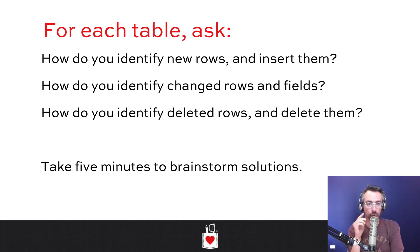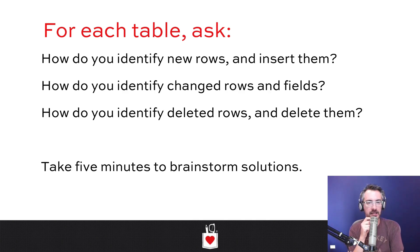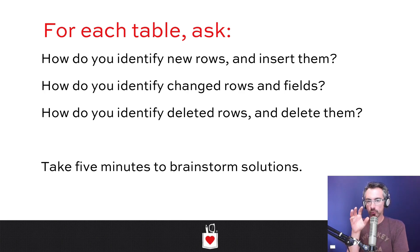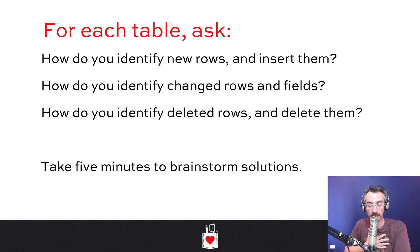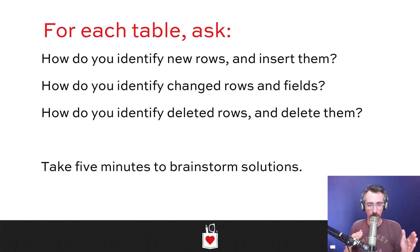Order ID number two is actually in production, but not in DR. Does that mean order ID number two is a new order that needs to be inserted? Somehow we need to capture the fact that Brent canceled his order, because that's really a business problem, not a data problem. The business might say Brent did cancel his order — we should refund that, even though it's our systems that were in the wrong. We have to figure out what the difference between a new order and a different order is. That's way trickier than it looks.